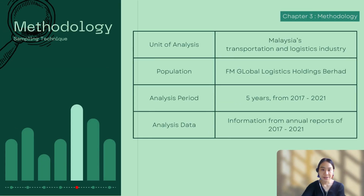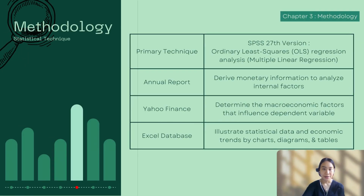For methodology, the unit of analysis is Malaysia's transportation and logistics industry, with the population selected being FM Global Logistics Holdings Berhad. The analysis period is five years, from 2017 to 2021, using data from the company's annual reports. The primary statistical technique is SPSS version 27, using ordinary least squares regression, also known as multiple linear regression. Monetary information for internal factors was derived from annual reports, while macroeconomic data was obtained from Yahoo Finance.